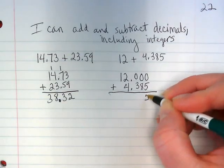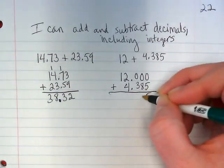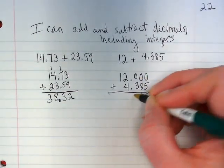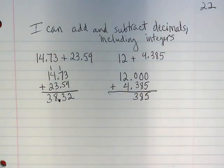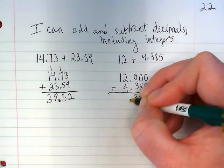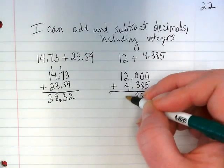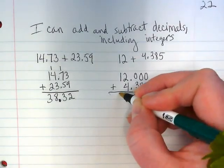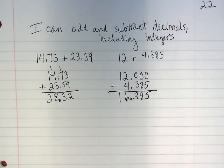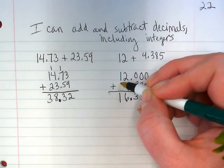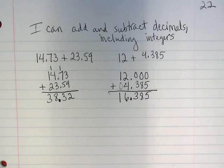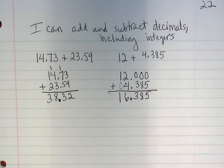Zero plus five, zero plus eight, zero plus three — bring down the decimal; two plus four is six, and bring down that one. If I really wanted to, I could also put a zero here as a placeholder to show something in each place, but do I need to? No.